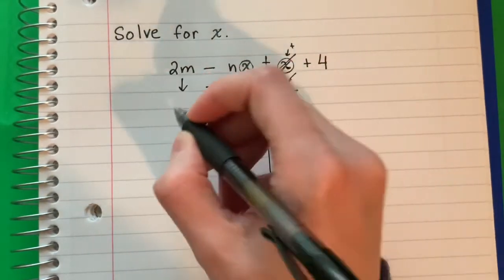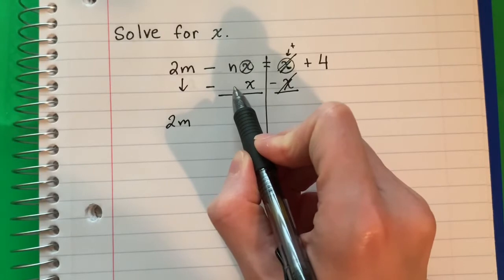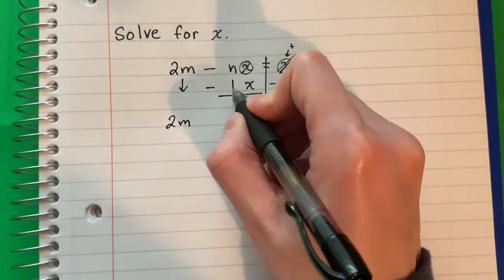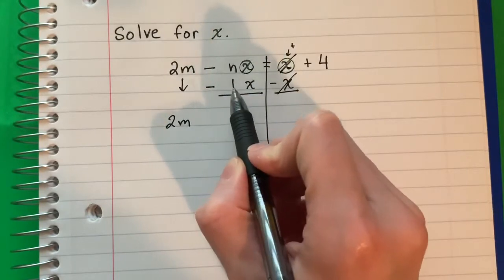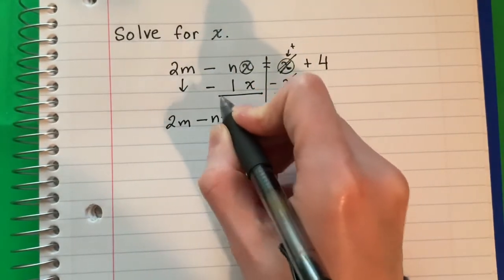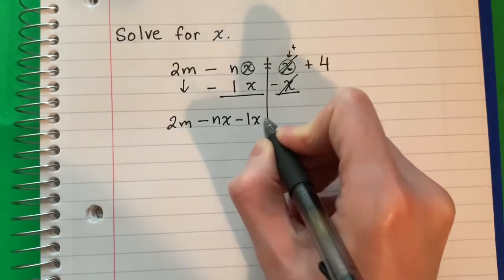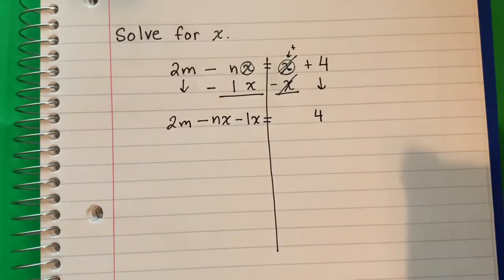I'm going to copy here 2m. Here there's nothing so I'm going to put a 1 here. So negative nx minus 1x, I'm going to put negative nx minus 1x equals, and I'm going to copy 4.